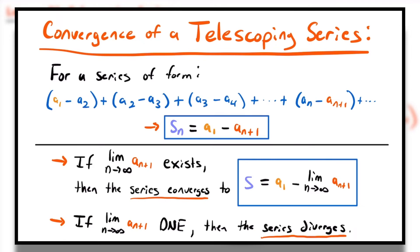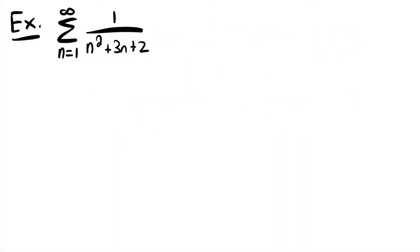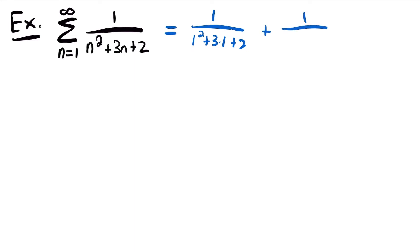Let's look at another example of a telescoping series whose convergence we can determine by using this method. Here we have the sum from n equals 1 to infinity of 1 divided by n squared plus 3 times n plus 2. Before we do anything, let's take a look at the first couple of terms of this series, plugging in n equals 1, 2, and 3.